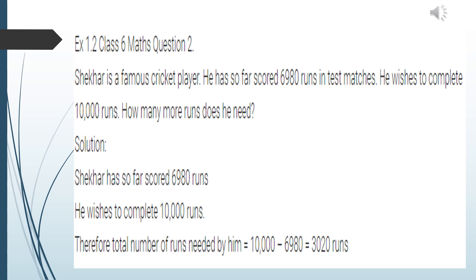Before starting, I take an example: suppose I have 100 rupees and I want to buy a book of rupees 150 — so how much more do I need? For finding this, we subtract 100 from 150. Similarly, runs needed = 10,000 − 6980 = 3020 runs.